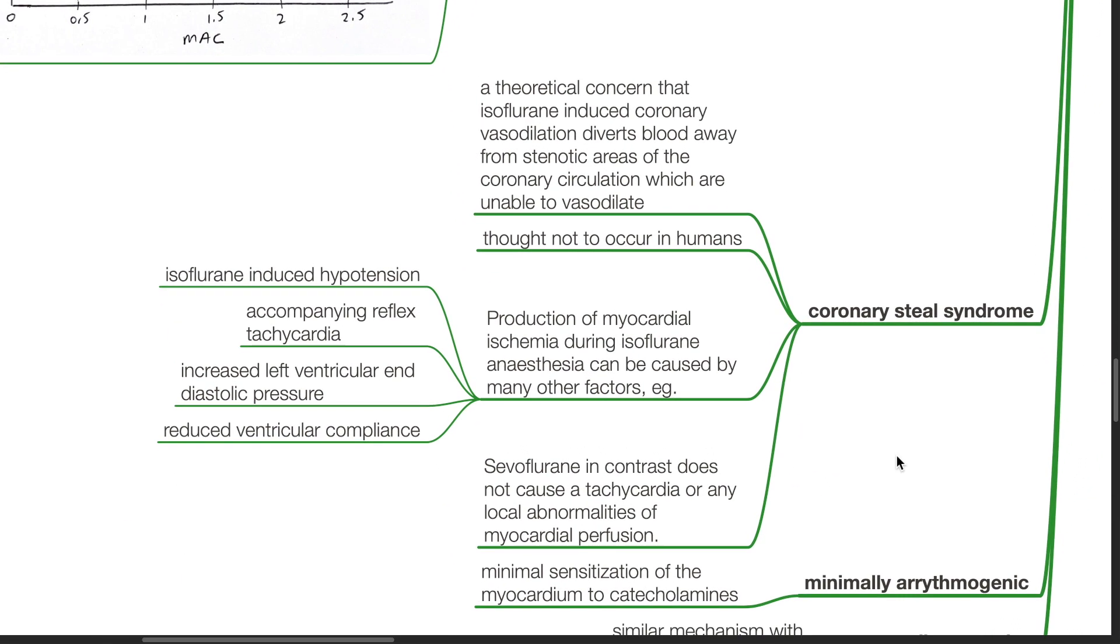Coronary steal syndrome is a theoretical concern that isoflurane-induced coronary vasodilation diverts blood away from stenotic areas of coronary circulation which are unable to vasodilate. This is thought not to occur in humans. Production of myocardial ischemia during isoflurane anesthesia can be caused by other factors such as isoflurane-induced hypotension, accompanying reflex tachycardia, increased left ventricular end-diastolic pressure and reduced ventricular compliance.